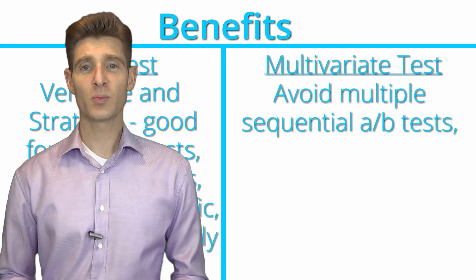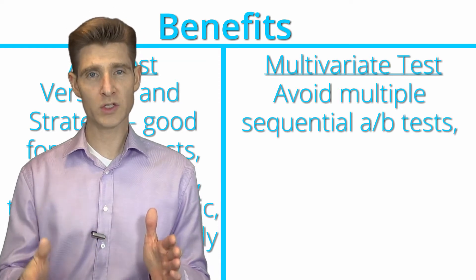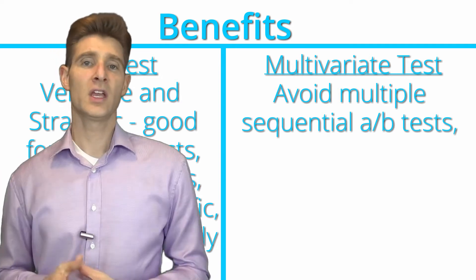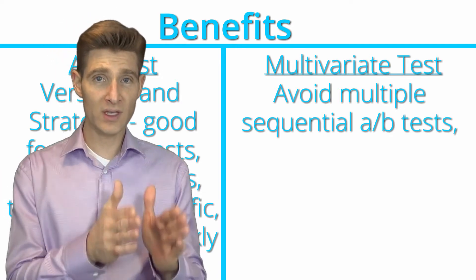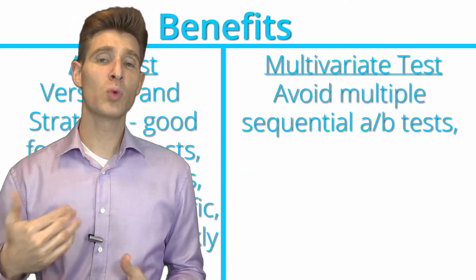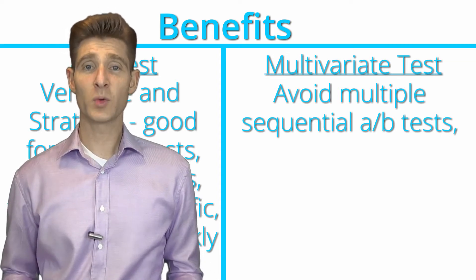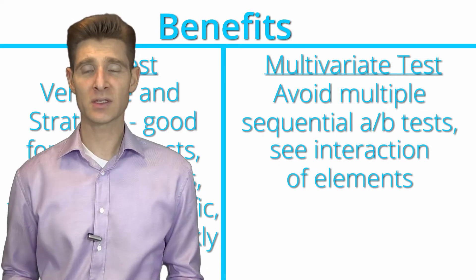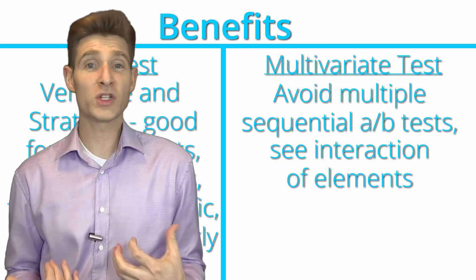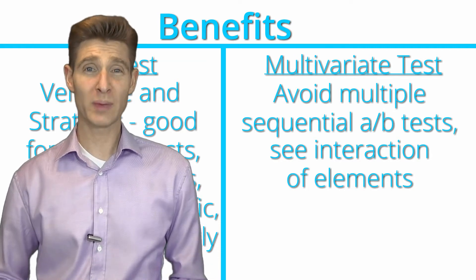The benefit of the multivariate test is that it prevents you from having to run multiple sequential A/B tests. With an A/B test you test one thing, then another, then another. If you have enough data and traffic, you can do a multivariate test and put all of those elements into one test at once. The other benefit is it allows you to see the interaction of elements — by combining different elements in different ways, you get to see the influence of the elements, the interaction of the elements, and the predicted winner. Those are all big benefits.